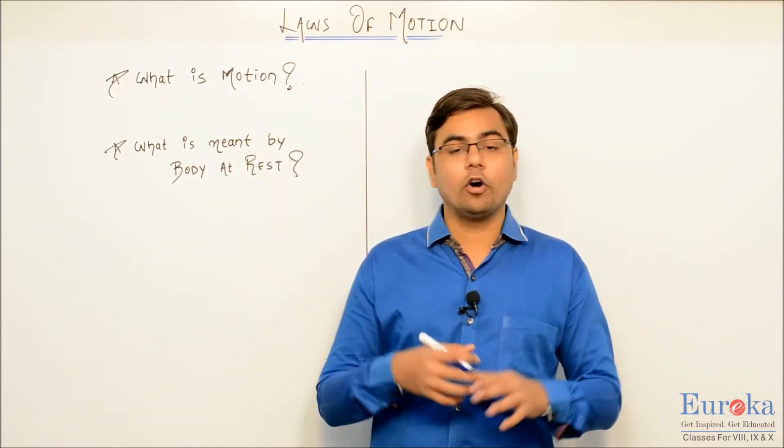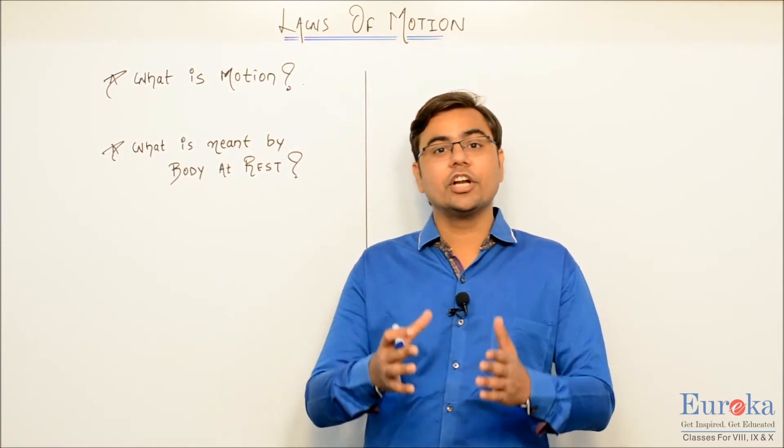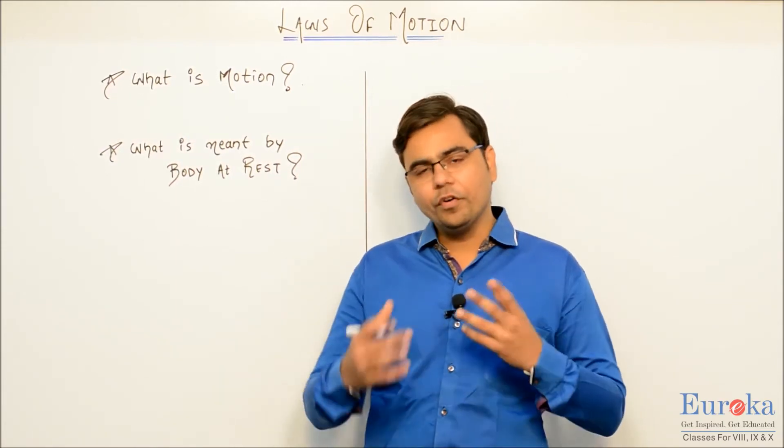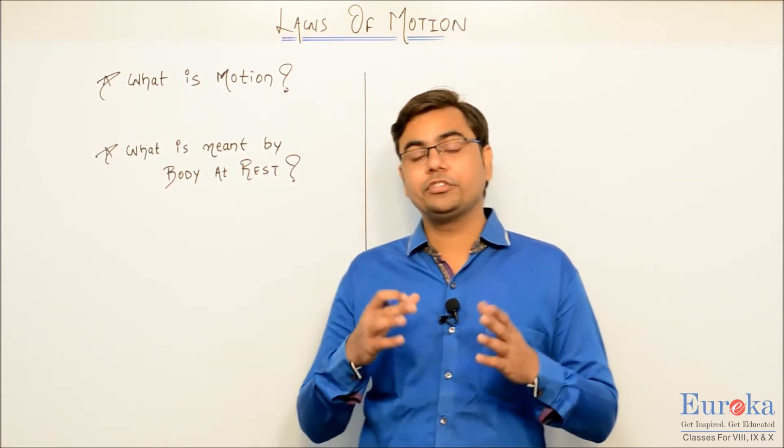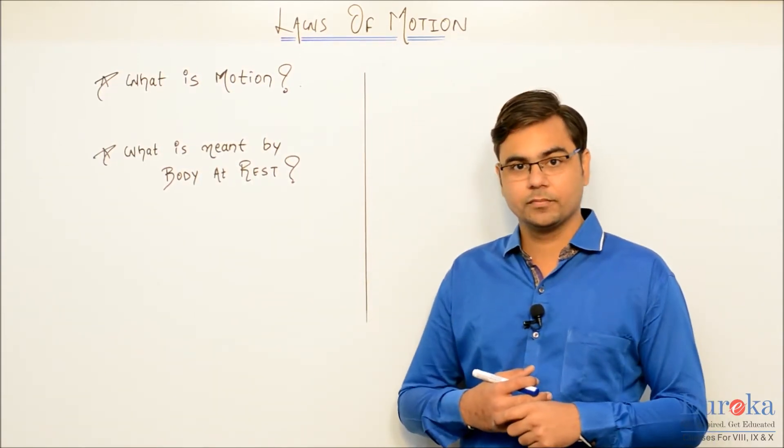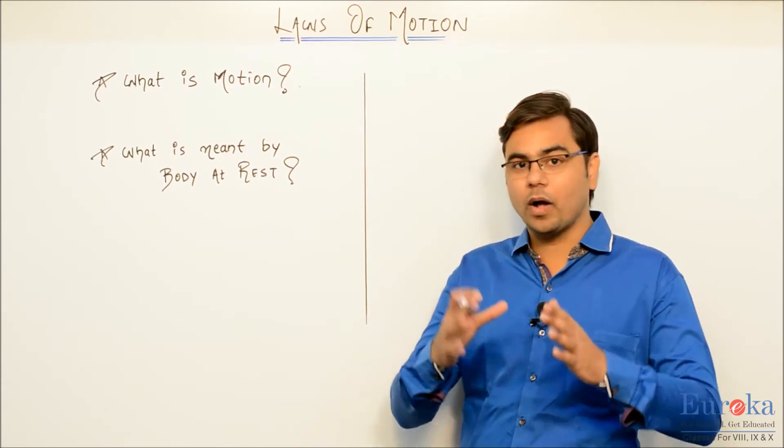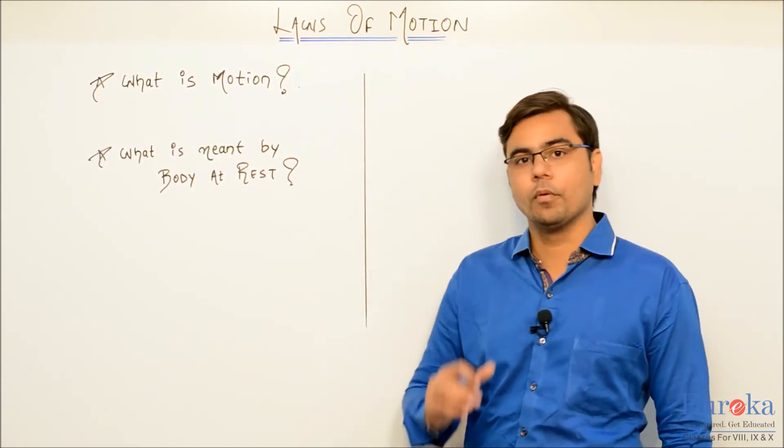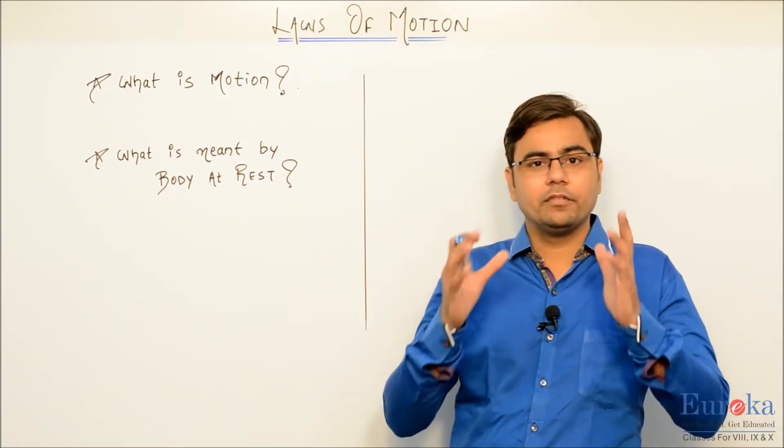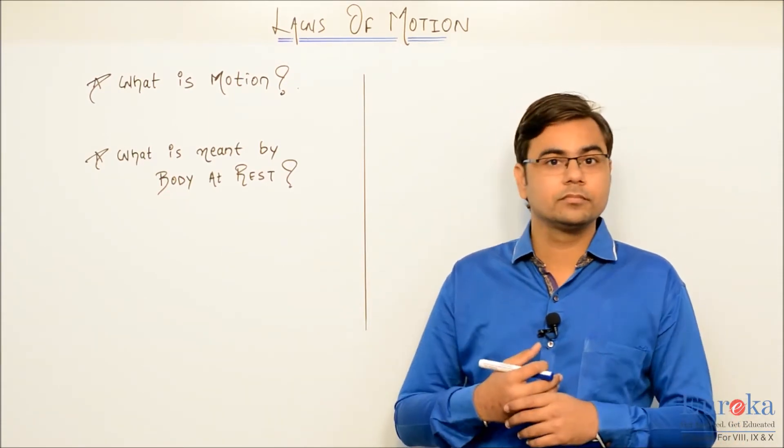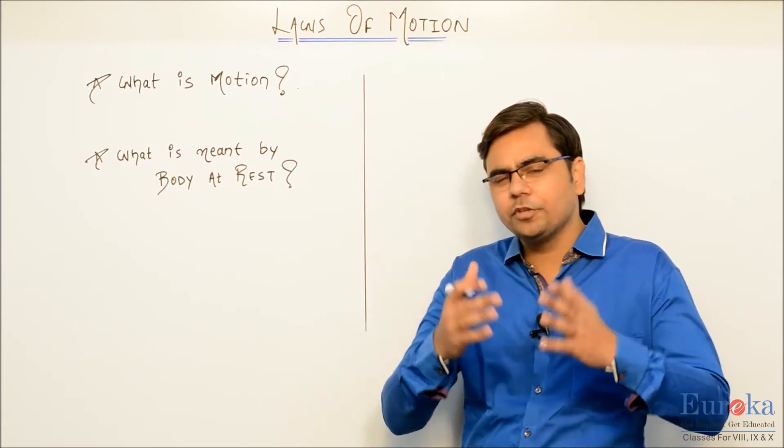So we know that whenever an object is moving, we can consider it to be in motion. However, there are several technical aspects related to the word motion which we are going to understand in this chapter. So the first thing we need to answer is what is motion? So how do you describe motion? Can you think of a situation in which an object is moving? Does it have a change in position?